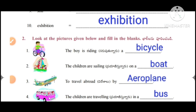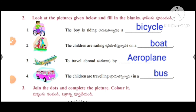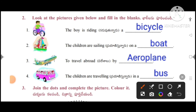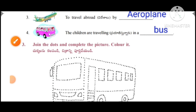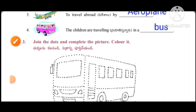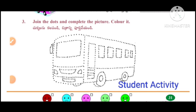Look at the pictures given below and fill in the blanks. First one: the boy is riding a bicycle. The children are sailing on a boat to travel abroad by aeroplane. The children are traveling in a bus. Join the dots and complete the picture and color it — student activity.